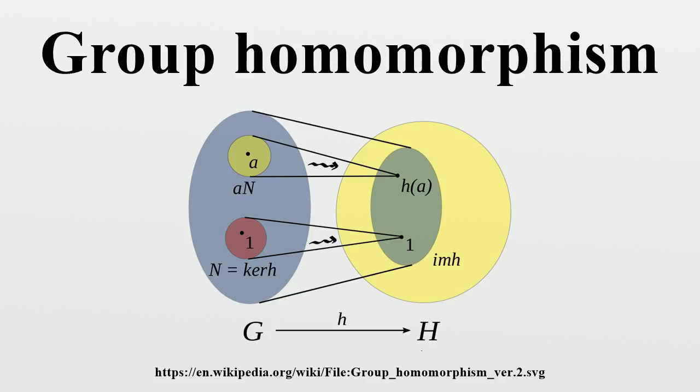The exponential map also yields a group homomorphism from the group of complex numbers C with addition to the group of non-zero complex numbers C* with multiplication. This map is surjective and has the kernel 2πi·Z, as can be seen from Euler's formula. Fields like R and C that have homomorphisms from their additive group to their multiplicative group are thus called exponential fields.